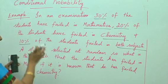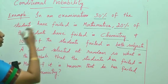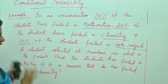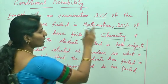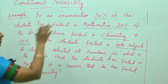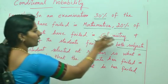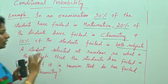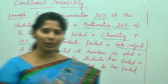Whatever the event you are taking it as A or B, accordingly you should write the conditional probability. If you are taking the mathematics subject as the event A, that is the failure students in mathematics as event A and the failure students in chemistry as event B, then you will take the conditional probability as P of A given B.